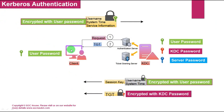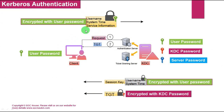The client wants to access the web server resources. The client will first prove its own identity in the network with the Authentication Server. The client sends an encrypted request message with the username, system time, and service information — all encrypted with the user password hash — and sends it to the Authentication Server. The Authentication Server in the KDC has the password for all user and computer accounts and decrypts the data with the user password hash stored in Active Directory.